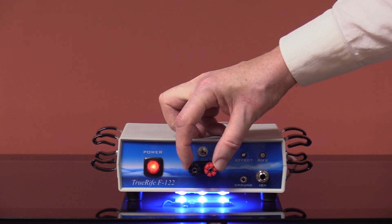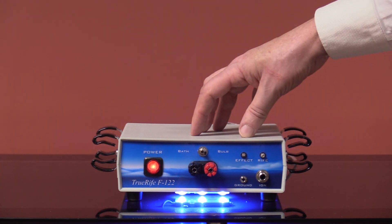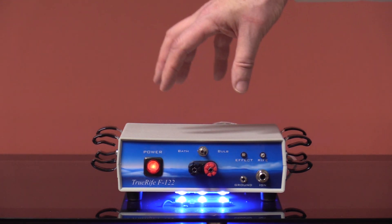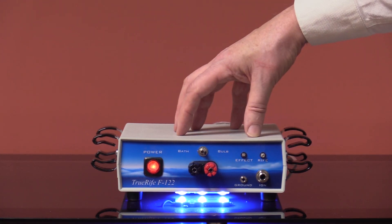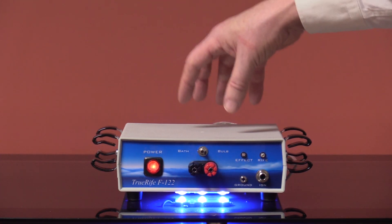You want to have a bulb plugged in whenever running the F-122. The reason is because there is 1800 volts coming from these terminals. If there's no bulb plugged in and you actually start a program in this device, then arcing will occur here and you can blow a fuse or a transistor.